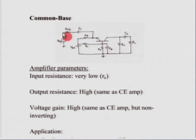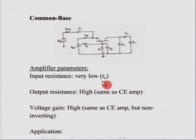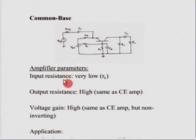Since we are applying the input signal to the emitter, if you look at the equivalent circuit, you would see that the input side would have capital R_e in parallel with small r_e. We know that small r_e is a very small resistance. Therefore the input resistance will be small r_e, which is an extremely small value. This is one of the major differences between a common emitter and a common base amplifier — in a common base amplifier, the input resistance is very low.